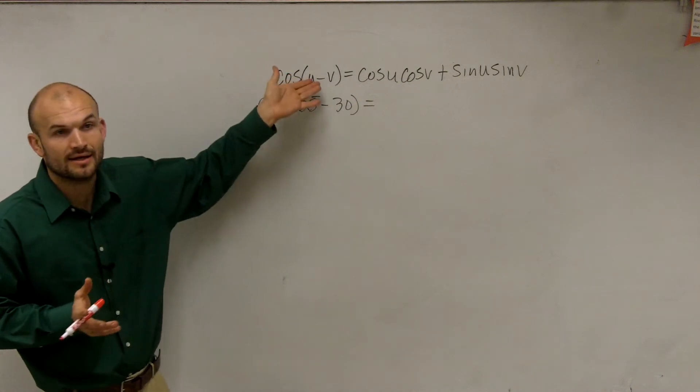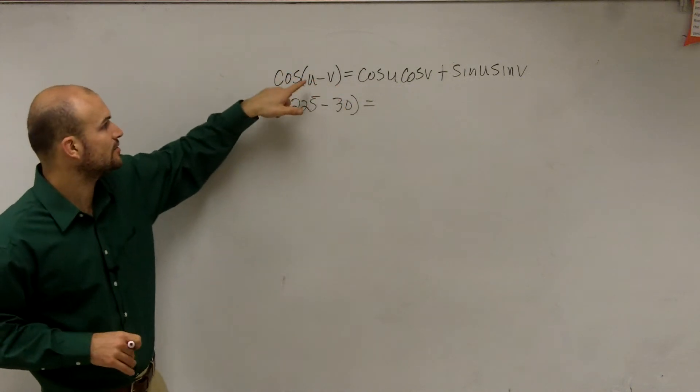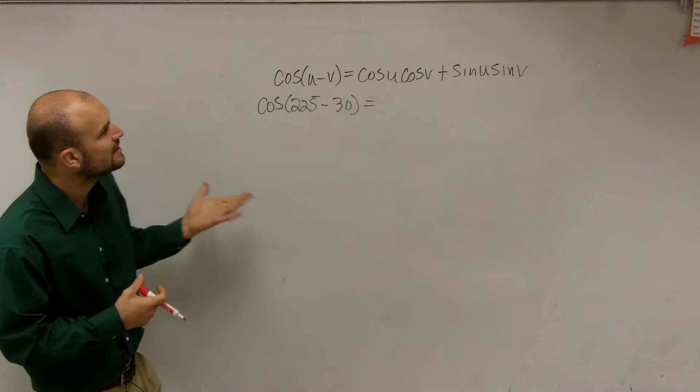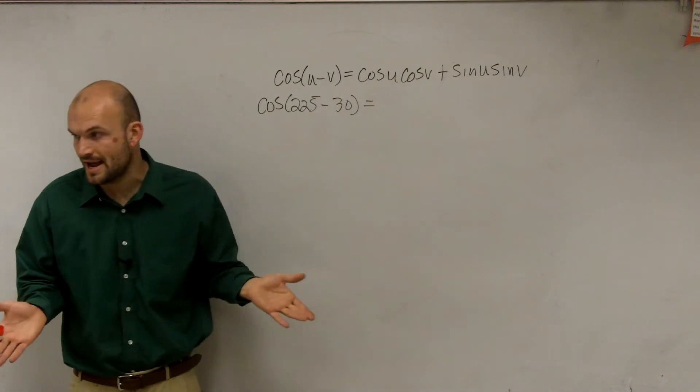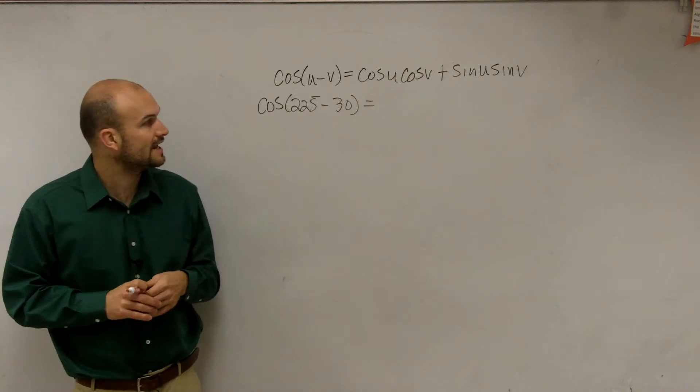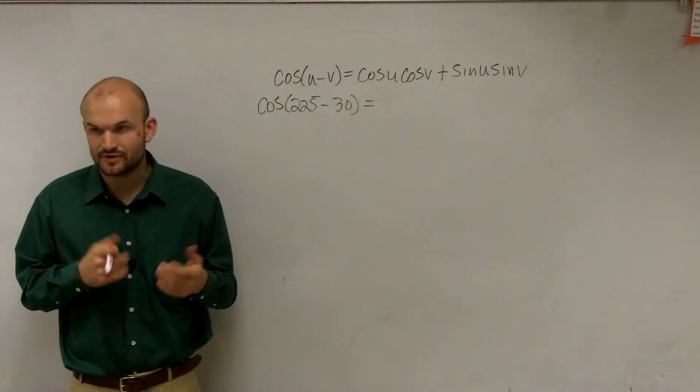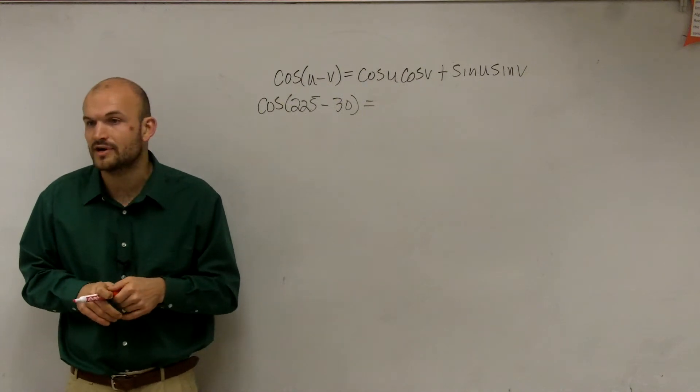So we need to make sure we apply the difference formula for cosine, which states the cosine of u minus v is equal to the cosine of your angle u times the cosine of your angle v plus the sine of your angle u times the sine of your angle v.